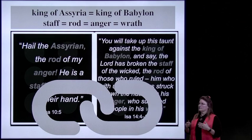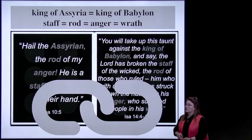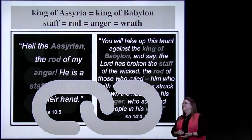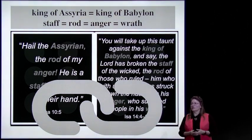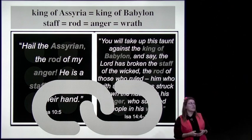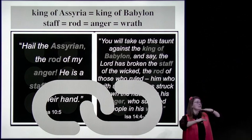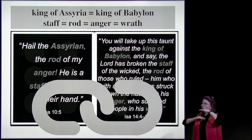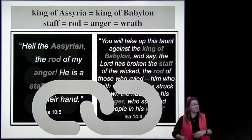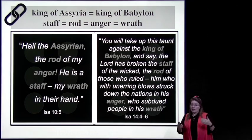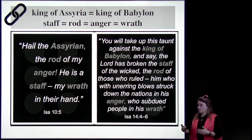Now we're going to look at some words we're going to call metaphorical pseudonyms. A pseudonym is a name that's not really your name, and a metaphor compares it to something else. We're going to have names that are pseudonyms for the king of Assyria in the book of Isaiah. You can actually link these names together through parallelisms in Hebrew and come up with a whole dictionary of code names for the different characters. Let's start with the king of Assyria in Isaiah chapter 10.